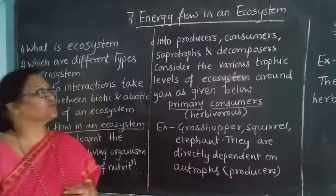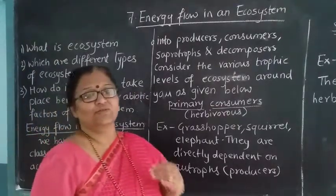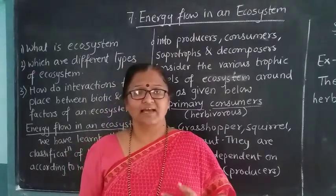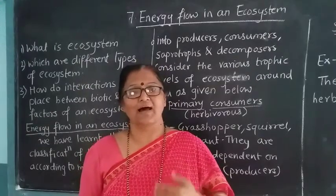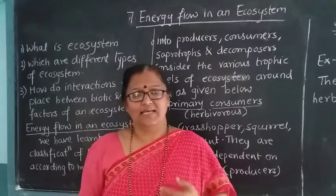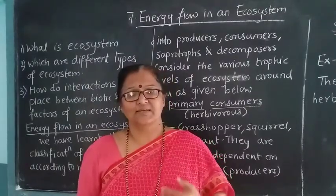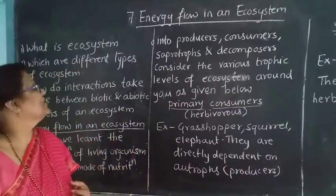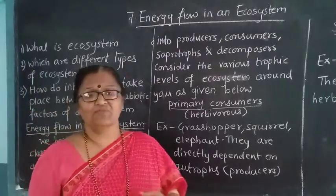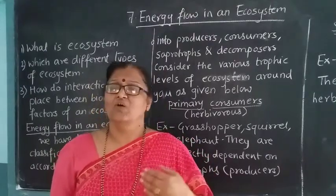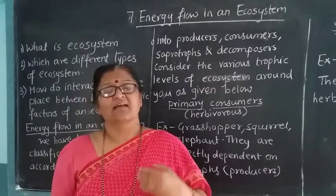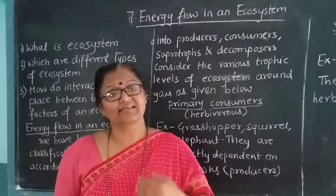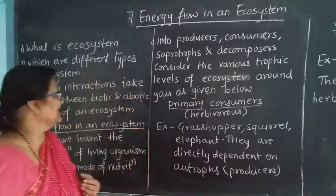Before going to this chapter, first you should know what is ecosystem. There are various ecosystems on your earth — land ecosystem, water ecosystem, air ecosystem, plant ecosystem, animal ecosystem, soil ecosystem, forest ecosystem, desert ecosystem. Various types of ecosystems are present.